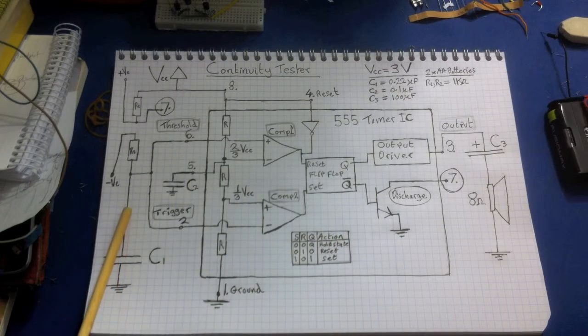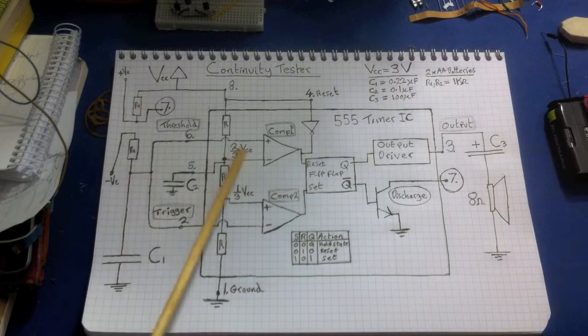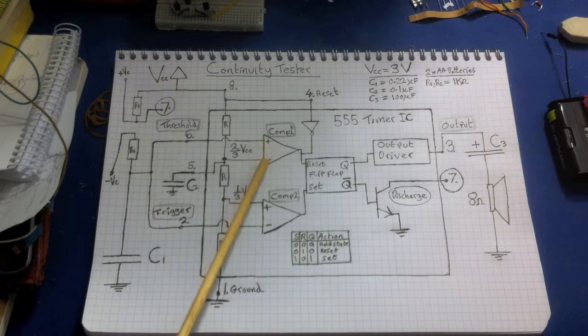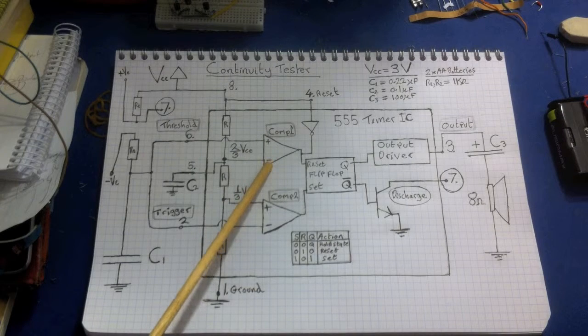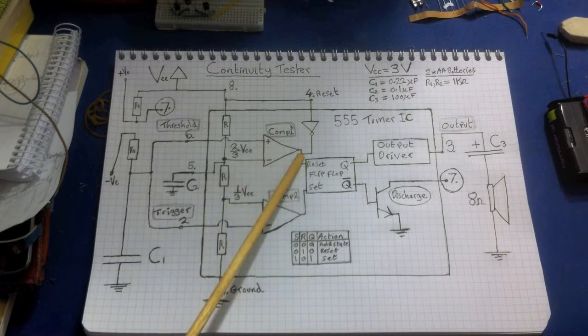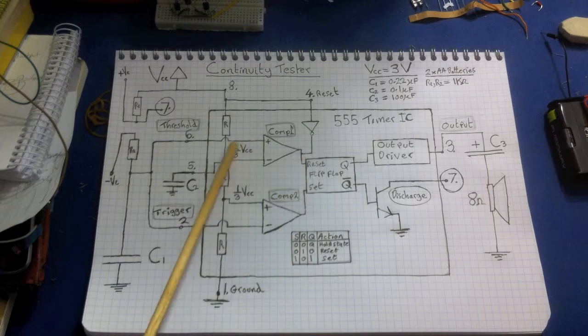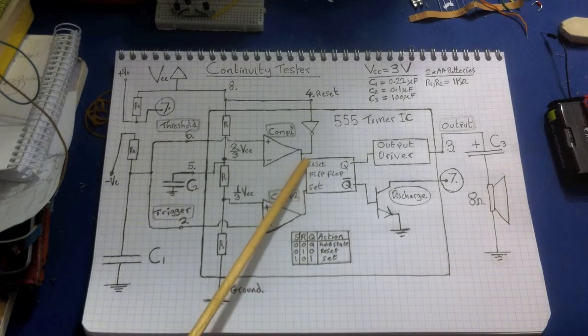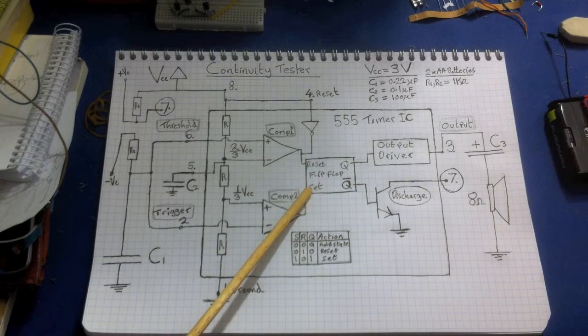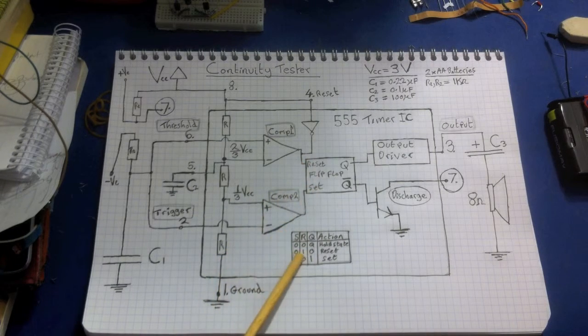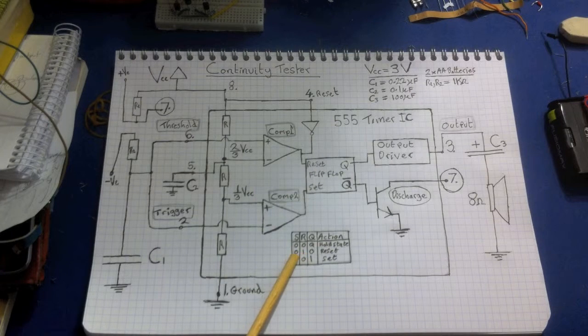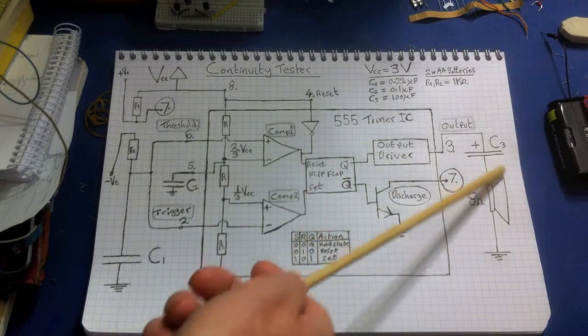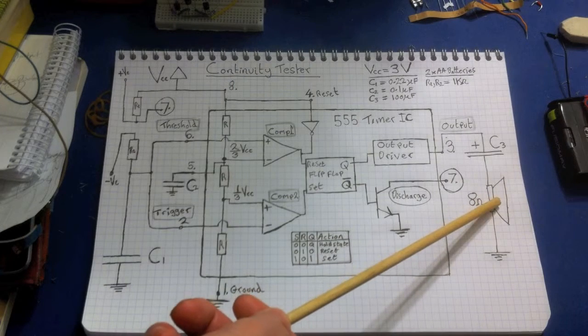But as the capacitor continues to charge up, eventually we're going to reach, this value here is going to go above two-thirds Vcc. Now we know that when the plus input of a comparator is higher than the minus input of the comparator, then the comparator will output high. So when we reach past two-thirds Vcc, this comparator will go high, it's going to activate the reset. So now we've got a high on the reset, and remember we've got a zero on the set. So if we look at our chart again, we've got a one on the reset and a low on the set, that means that the output's going to be low. So this output's going to be low. In other words, there's no more charge flowing through the speaker, so the speaker is now off.